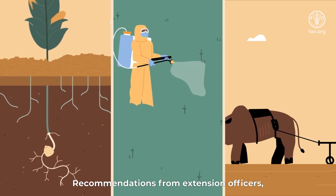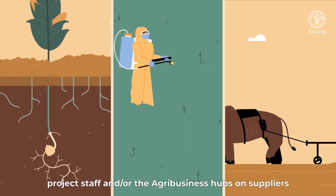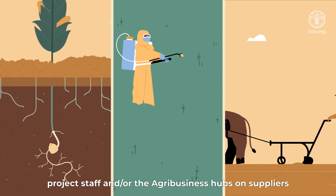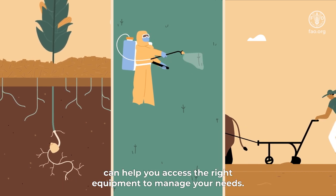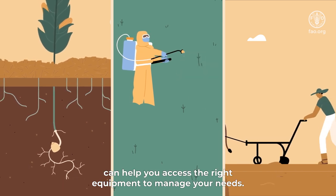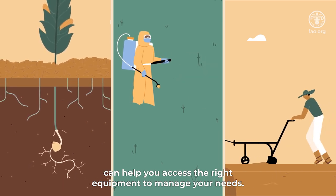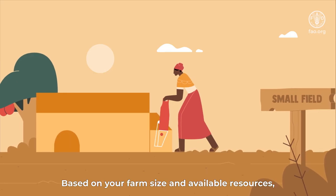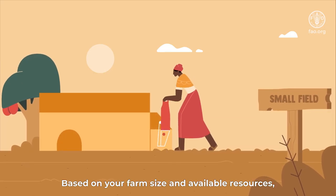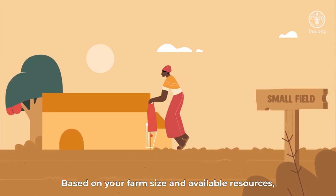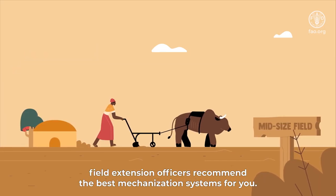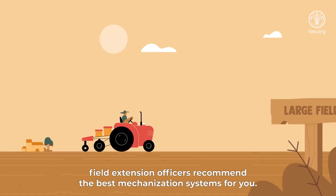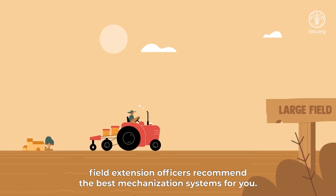Recommendations from extension officers, project staff and/or the agribusiness hubs on suppliers can help you access the right equipment to manage your needs. Based on your farm size and available resources, field extension officers recommend the best mechanization systems for you.